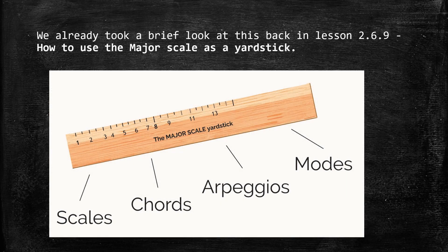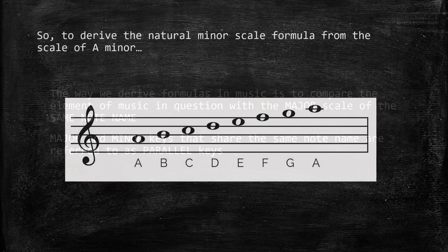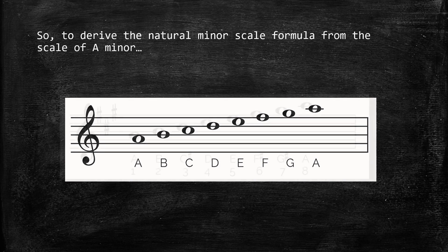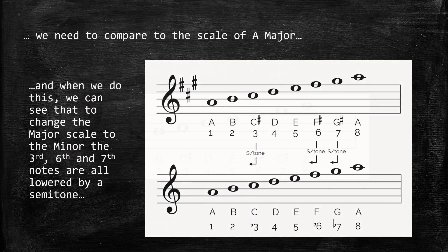We already took a brief look at this back in lesson 2.6.9 — how to use the major scale as a yardstick. The way we derive formulas in music is to compare the element in question with the major scale of the same note name. Major and minor keys that share the same note name are referred to as parallel keys. So to derive the natural minor scale formula, we compare A minor to A major, and we can see that the third, sixth, and seventh notes are all lowered by a semitone.